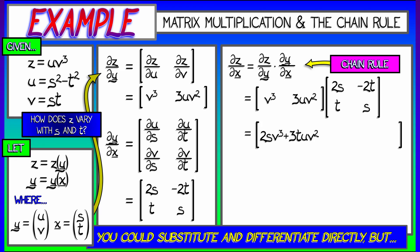And then just write it out. We get 2s v cubed plus 3tu v squared for the first term. And for the second term, we get negative 2t v cubed plus 3s u v squared.